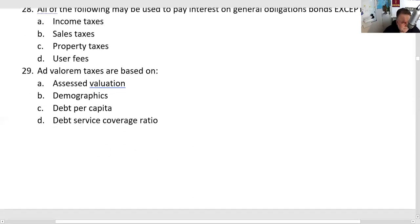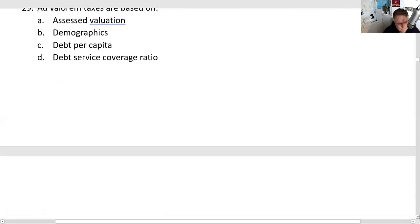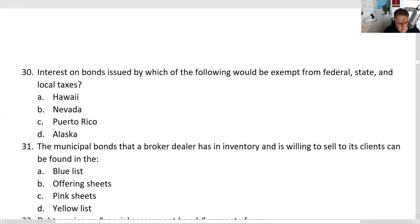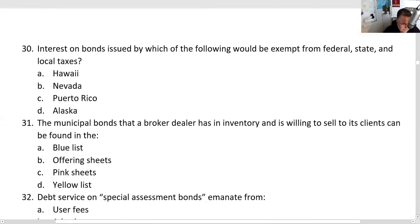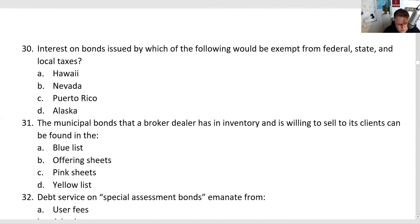Ad valorem is Latin for 'added value' — that's the property tax based on assessed valuations, answer A. Puerto Rico is a favorite on the test: the territories of the U.S. government — Puerto Rico specifically — have bonds that are exempt from federal, state, and local taxes. Hawaii, Nevada, and Alaska are not territories. It's going to be Puerto Rico on the exam, so make sure you know the territories.